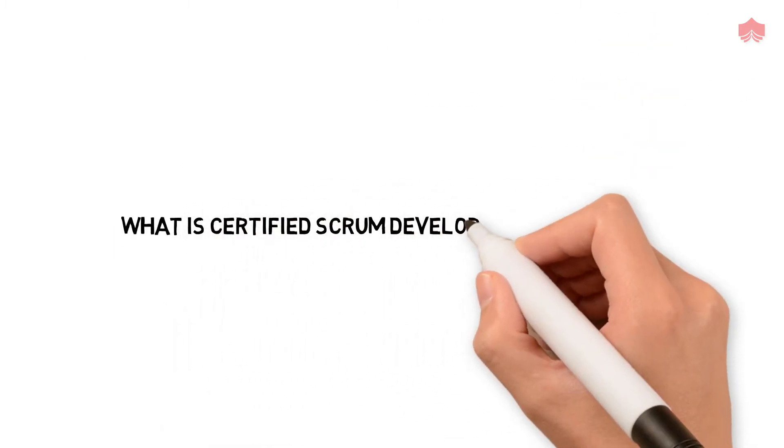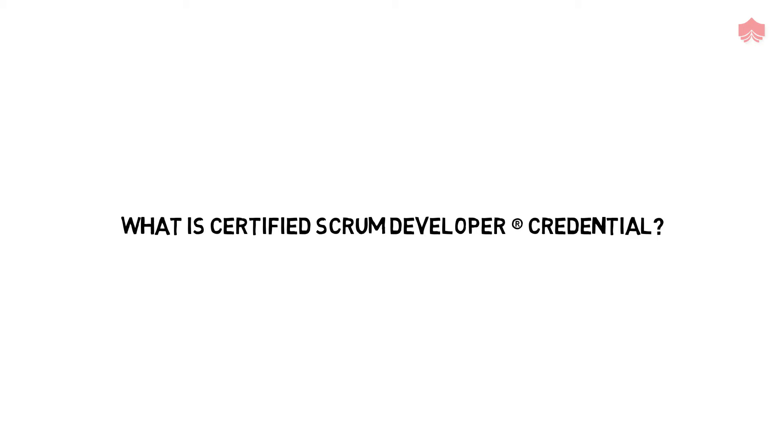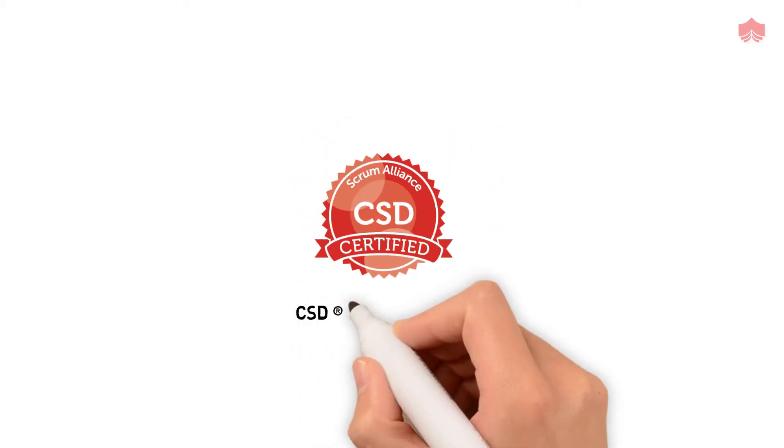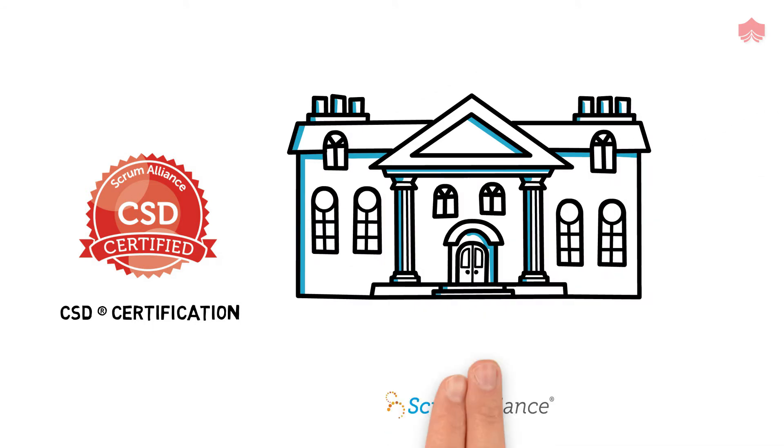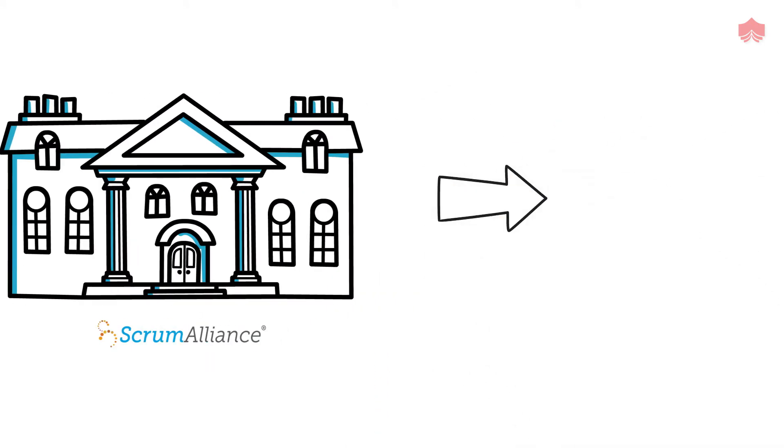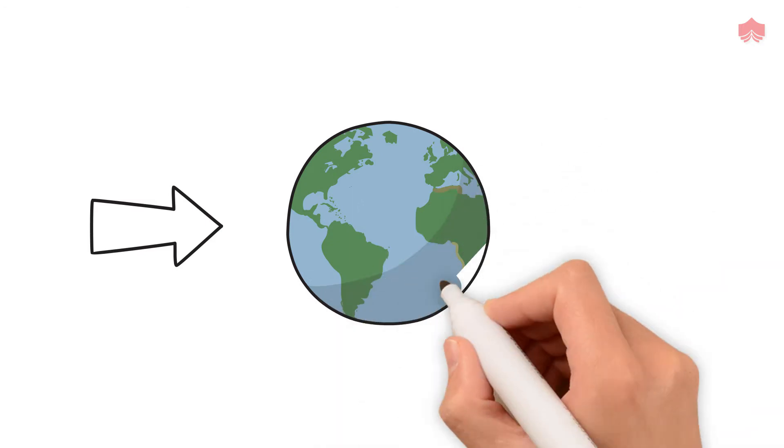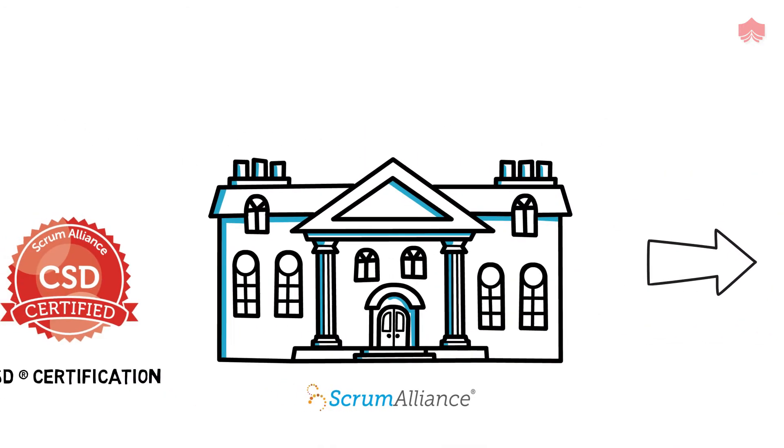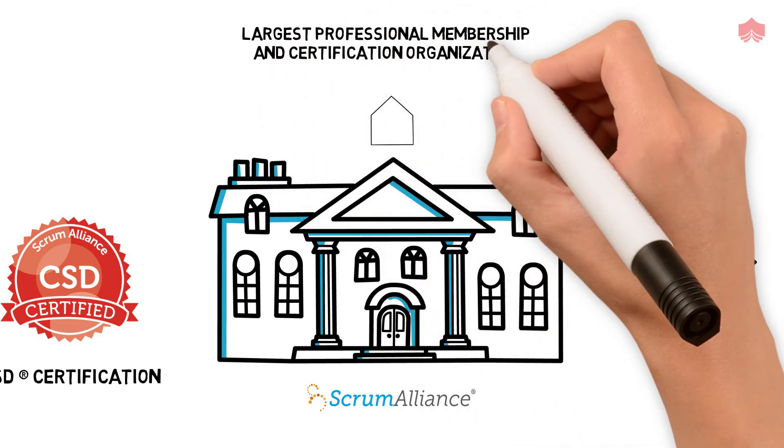What is Certified Scrum Developer Credential? The CSD certification is a credential offered by the world-renowned Scrum Alliance. Scrum Alliance is an international body that aims to promote the use of Scrum across the world. It is the largest professional membership and certification organization in the Agile community.